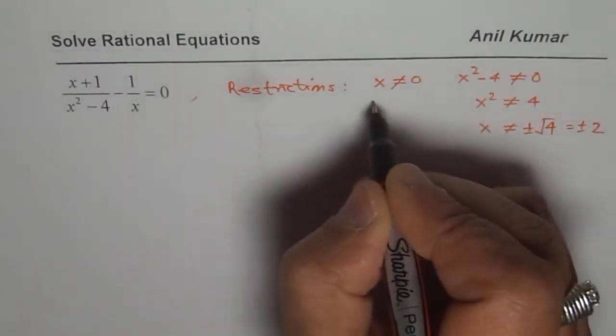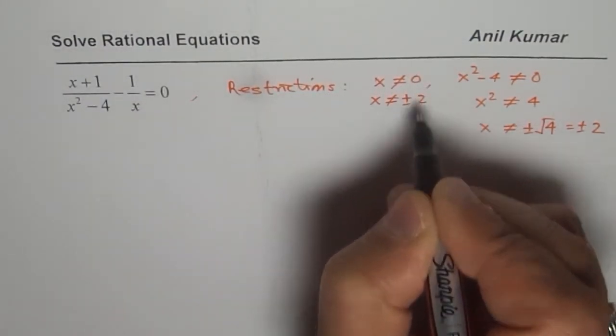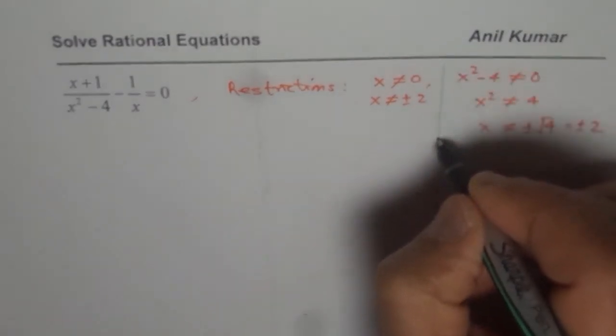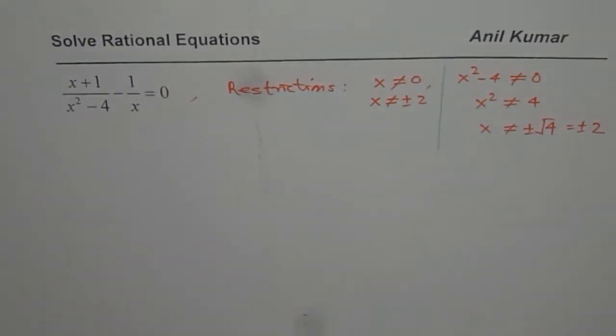So we get the other 2, that x is not equal to plus minus 2. So we get basically 3 restrictions for this equation, right? Now let us begin solving this particular problem.